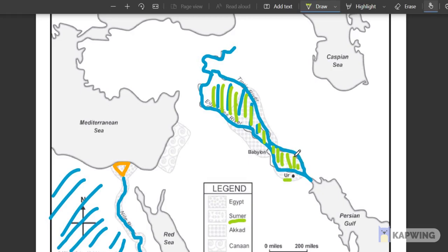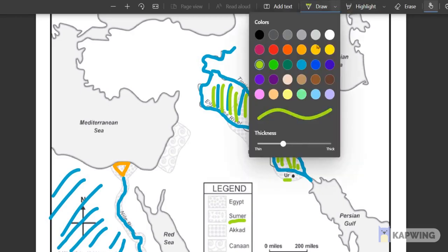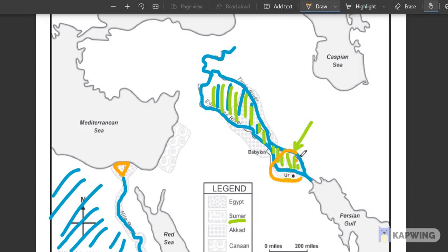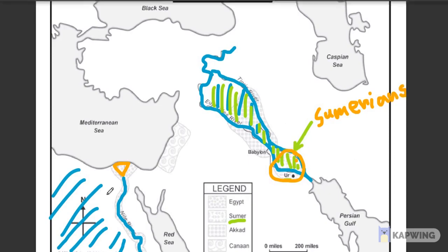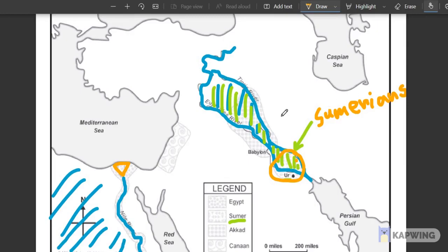Sumer is where Sumerians live. There's a region over here that I'm going to mark in an orange circle. That's called Sumer — S-U-M-E-R — and the people who lived here were called Sumerians. Sumerians, just Sumer with I-A-N-S — Sumerians. So they built, like the Egyptians here in Egypt, Sumerians also built temples like pyramids, but they were not exactly pyramids. They were different — they were called ziggurats.